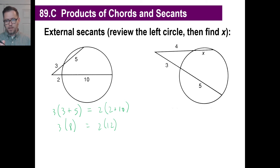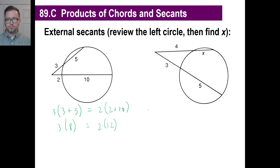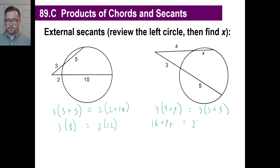Go ahead and pause and try to use this exact formula to find what x is. You would say: 4 times (4 plus x) equals 3 times (3 plus 5). So 4 times 4 is 16, plus 4x. We already know the right side is 24. So 4x equals 24 minus 16, which is 8. Therefore x is equal to 2.